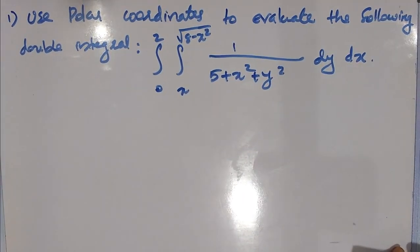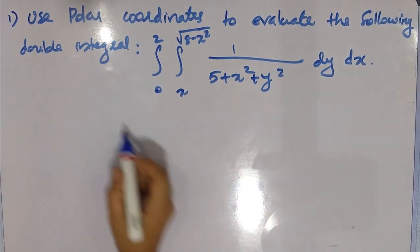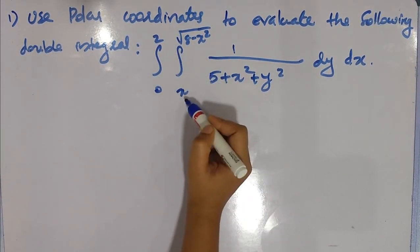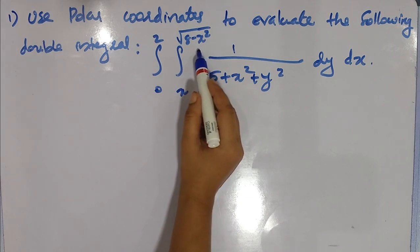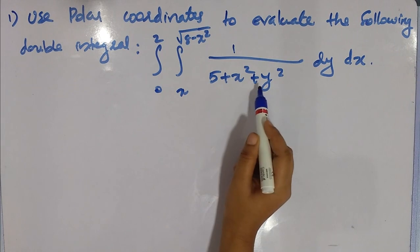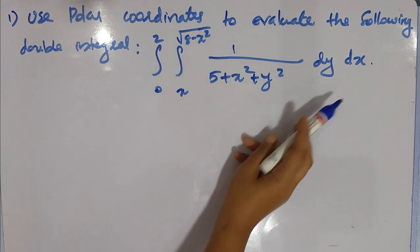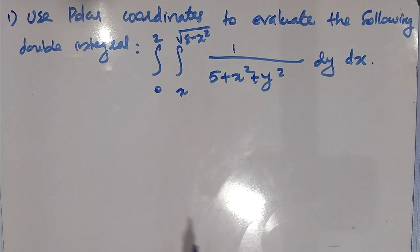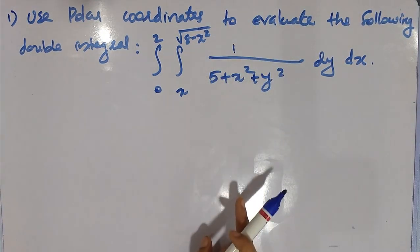Use polar coordinates to evaluate the following integral: integral from 0 to 2, integral from x to √(8 − x²), of 1/(5 + x² + y²) dy dx.